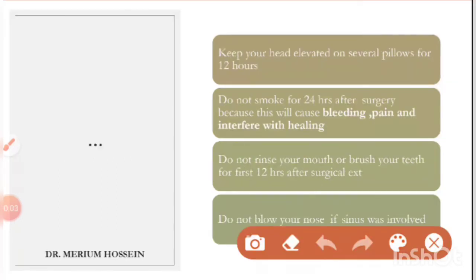Ask the patient to keep their head elevated on several pillows for the first 12 to 24 hours — this reduces pressure at the extraction site and limits bleeding and oozing. The patient should also avoid smoking for the first 12 to 24 hours as it can cause pain and increased bleeding. Forceful rinsing and brushing should also be avoided for the first 12 hours to prevent damaging the extraction site.